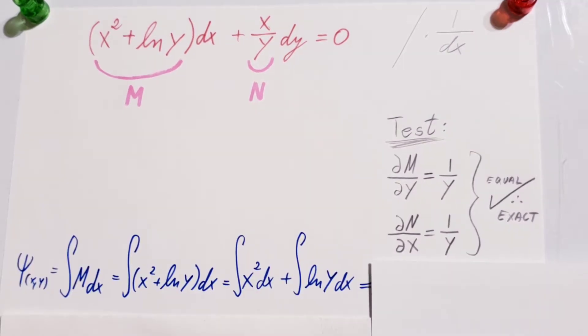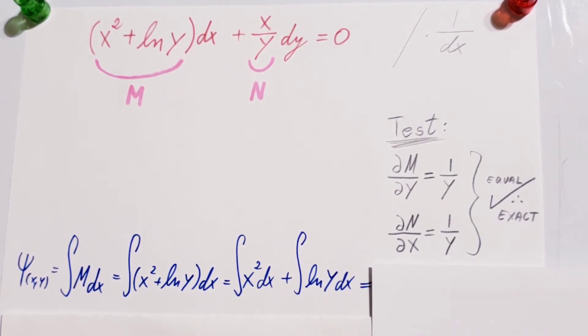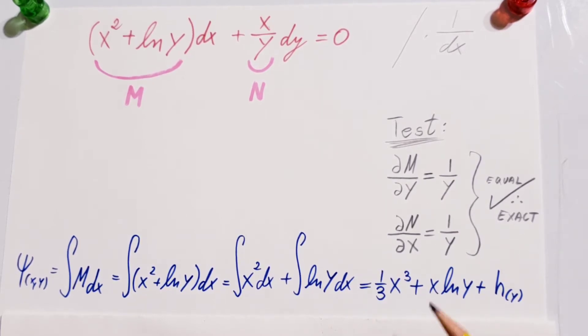Now, in the next step, we're going to take an integral with respect to only x of the part M. Plug it in. I'm going to break it into two integrals, and after I solve it, we're able to get 1 third x to the power of 3 plus x ln y plus h in terms of y.